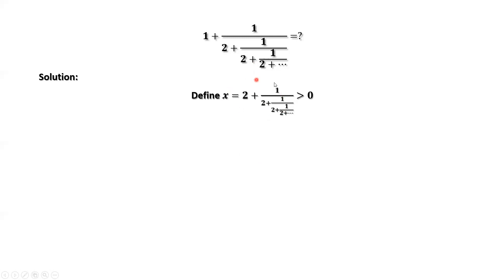How to solve this equation for x? Look at this x: x equals 2 plus 1 over 2 plus 1 over 2 plus forever. However, we have an infinite number of fractions inside this expression. If we look at the denominator of the second term, the denominator also has an infinite number of fractions — it is the same as we defined x. Therefore, we can replace this denominator by x. Then we have x equals 2 plus 1 over x.